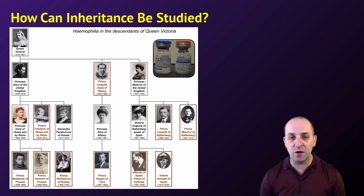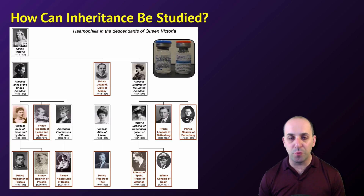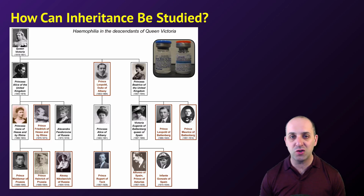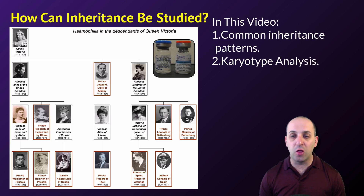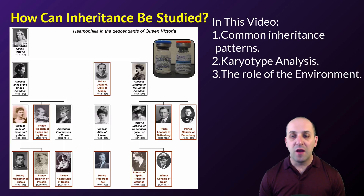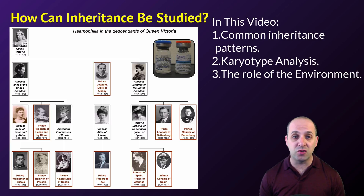These days, hemophilia is treated through injections of the clotting factors needed so that your blood will clot. This is done through recombinant biotechnology, and we'll talk more about that down the road. In this video, we're going to look at common inheritance patterns, talk a little bit about karyotype analysis, and the role that the environment plays in heritability.